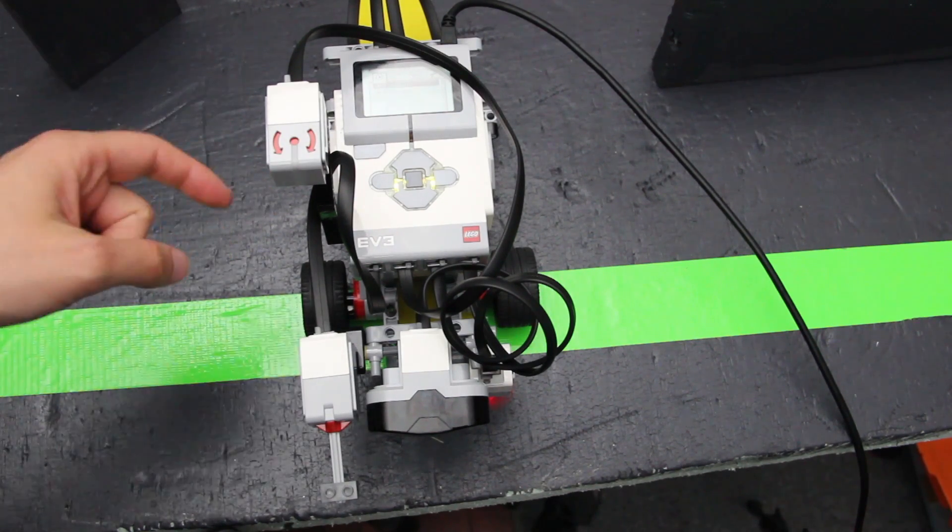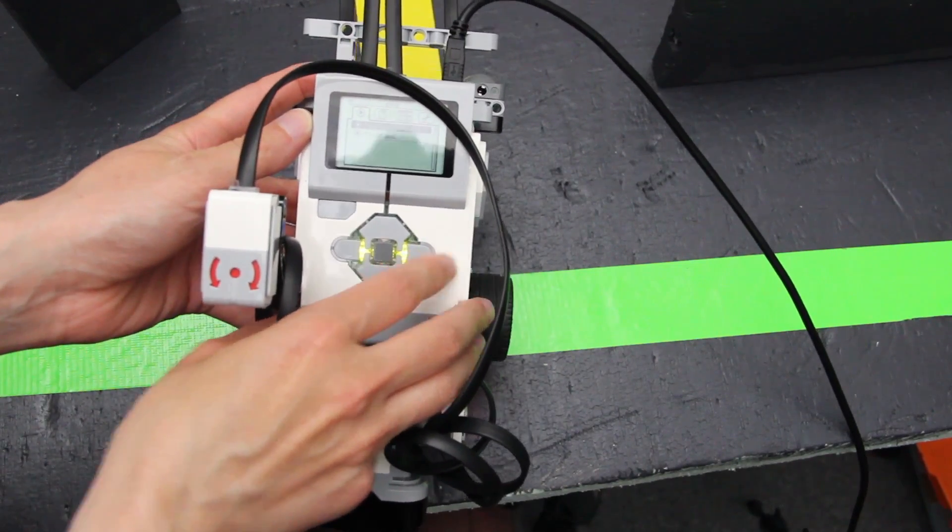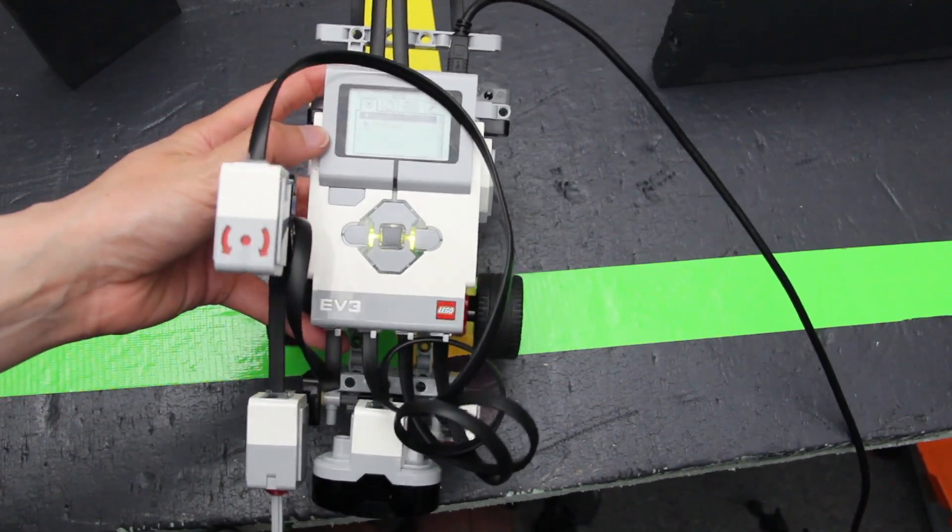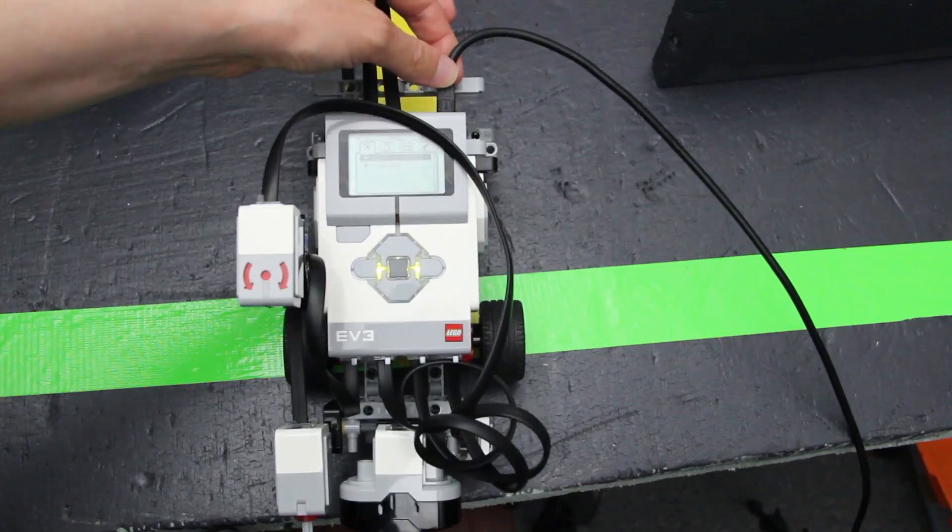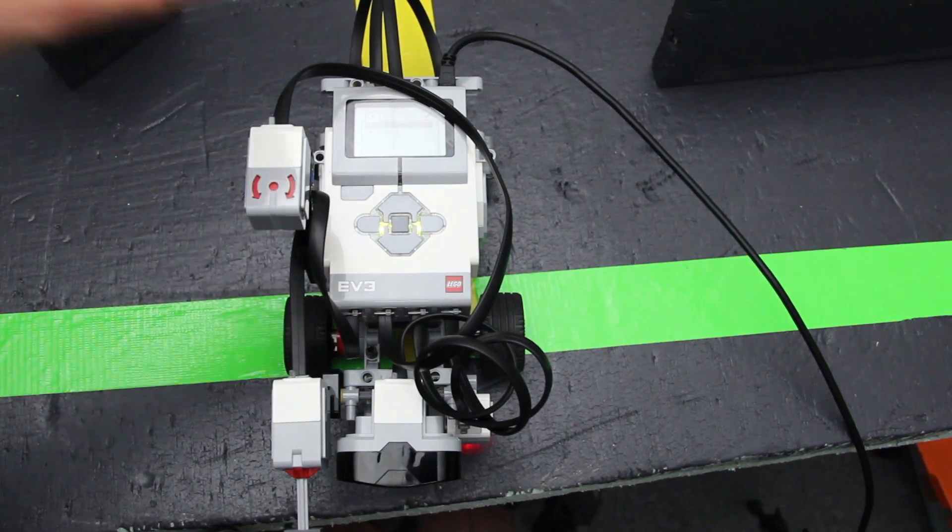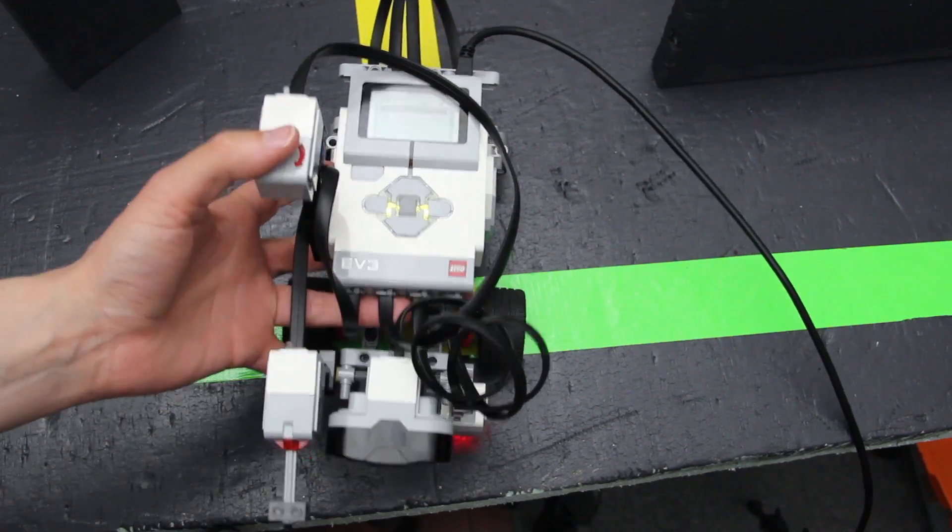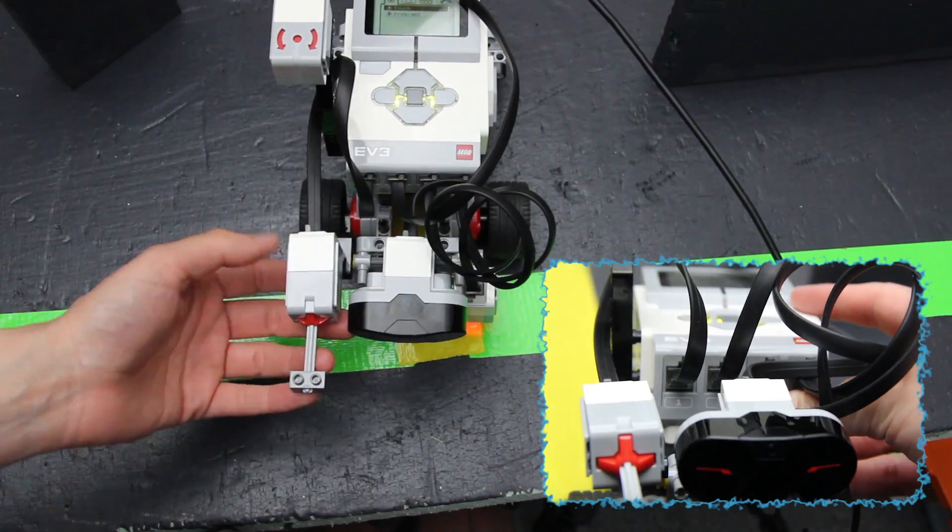We have an EV3 robot right here and the main part of it is called the brick. The EV3 brick is the robot's brain. This is where you're going to download your programs from the computer and it's going to tell the outputs, which are the motors, how they should turn and it's going to take inputs from the different sensors over here.